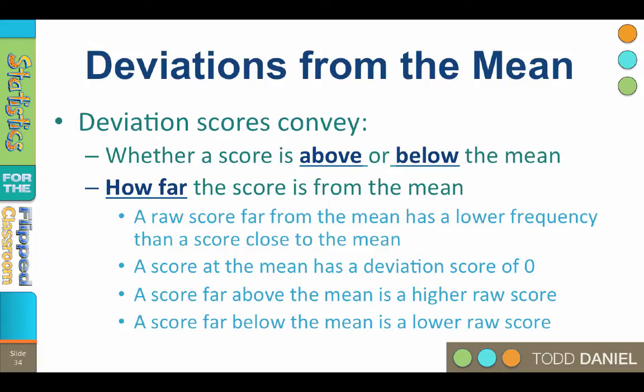The positive or negative value tells you whether the score is above or below the mean. Positive deviation scores are always above the mean. Negative deviation scores are always below the mean. The absolute value of the deviation score tells us how far it is from the mean. So the deviation score of positive 2 is 2 inches above the mean. If the mean is 5 foot 10, the person with a deviation score of positive 2 is 6 feet tall.